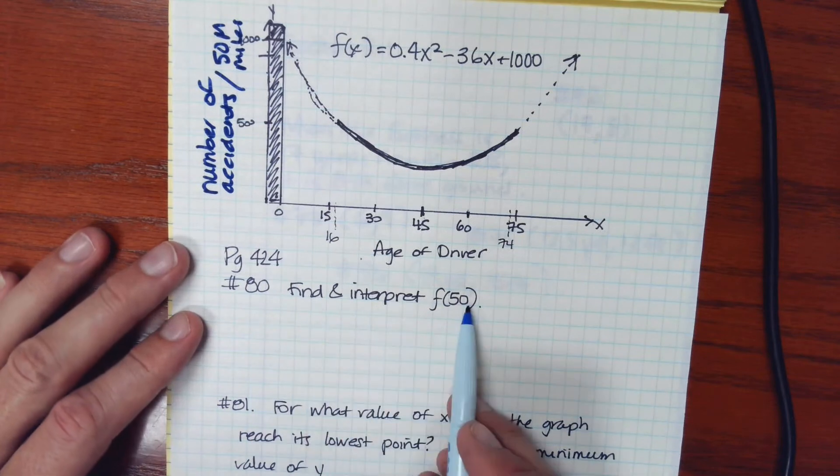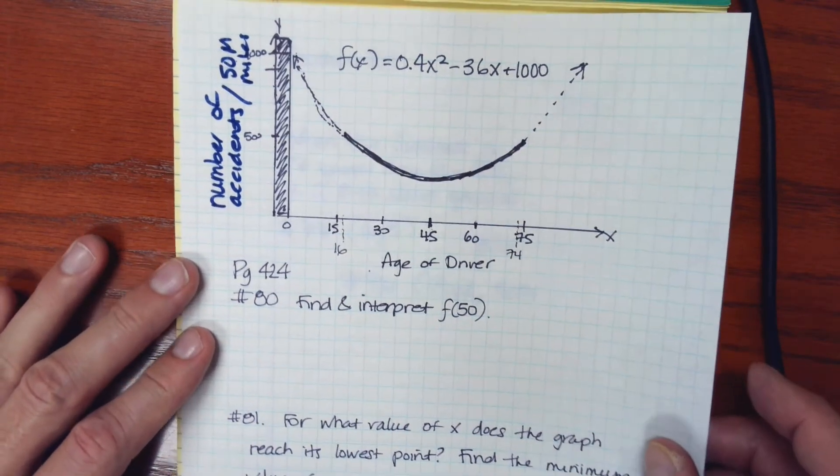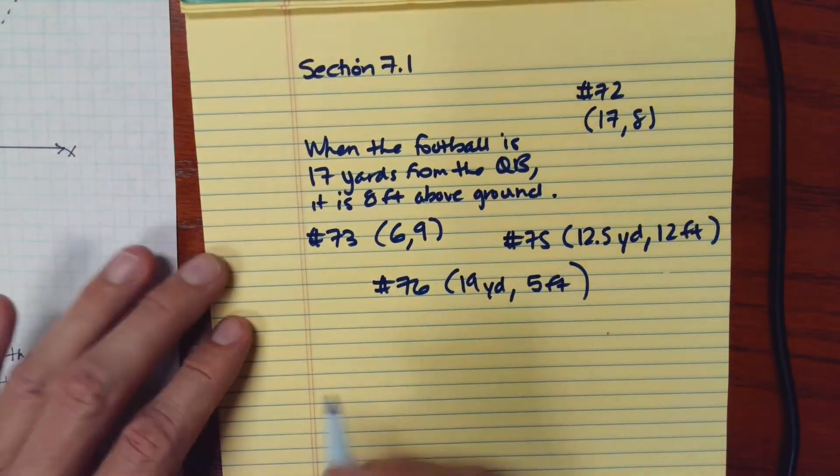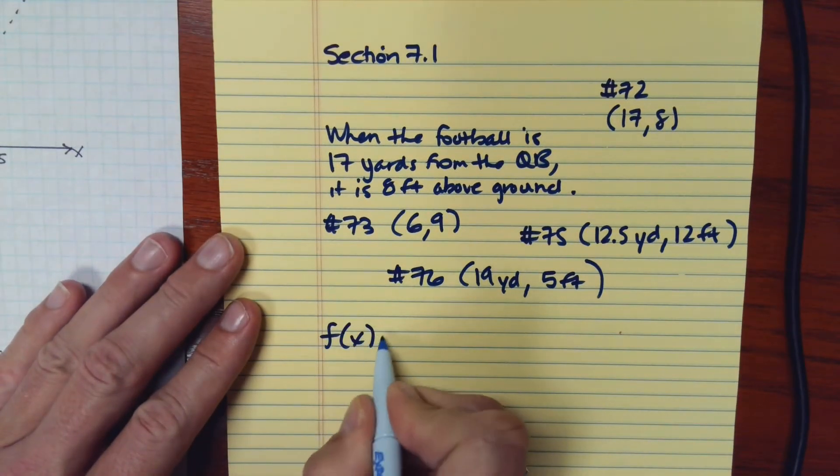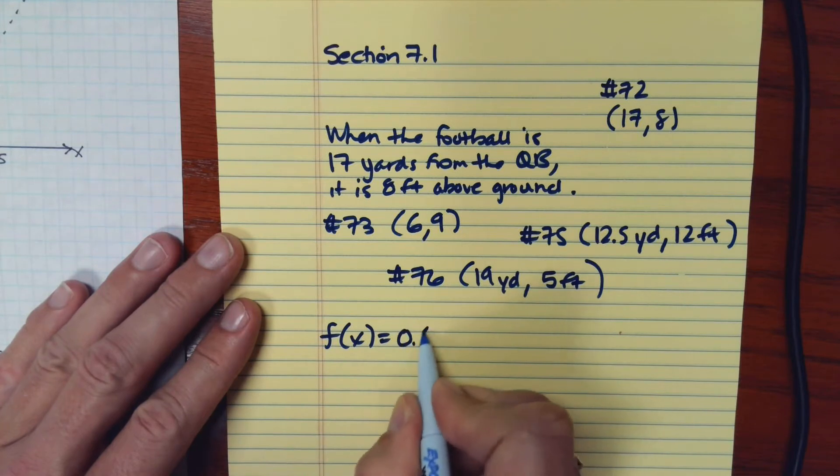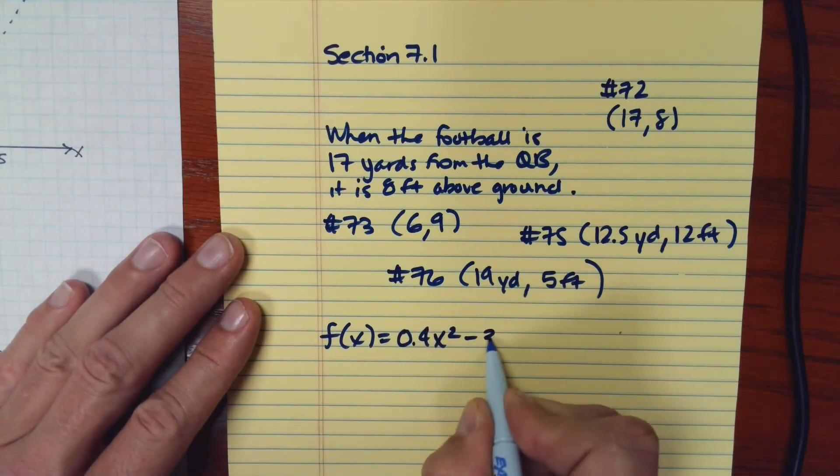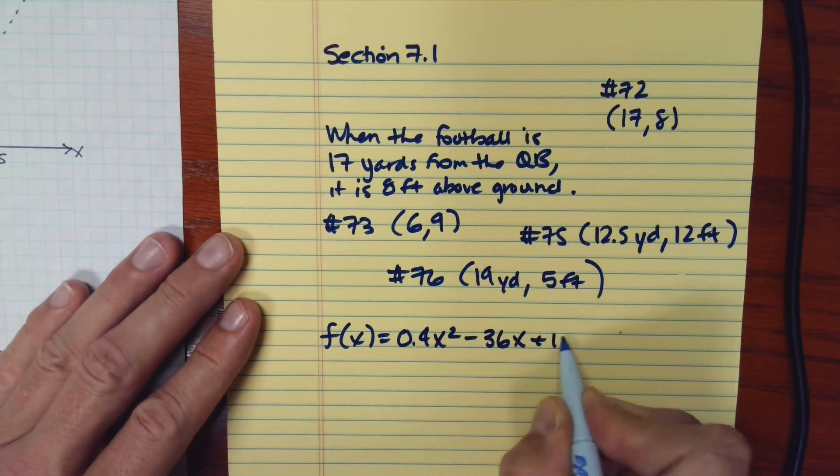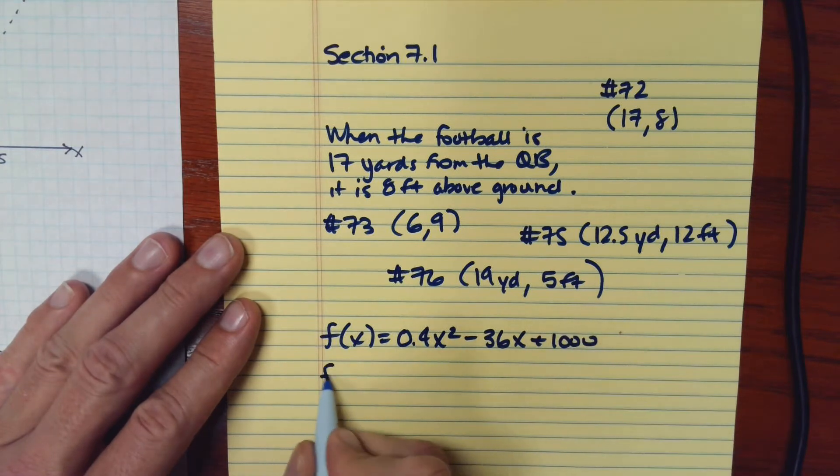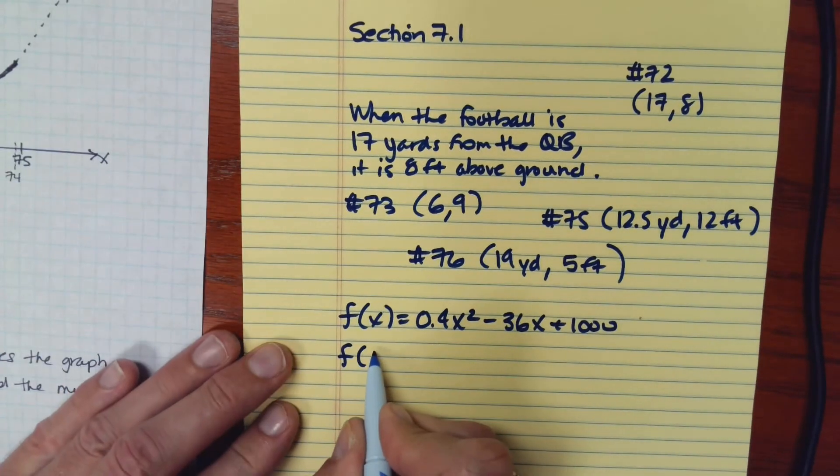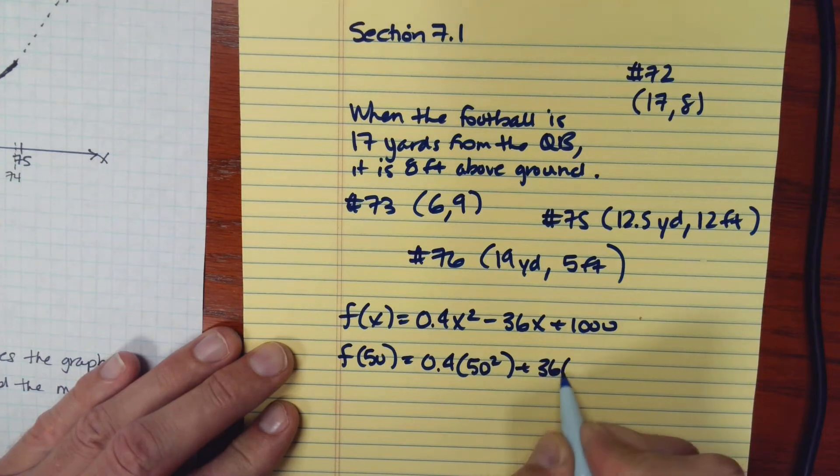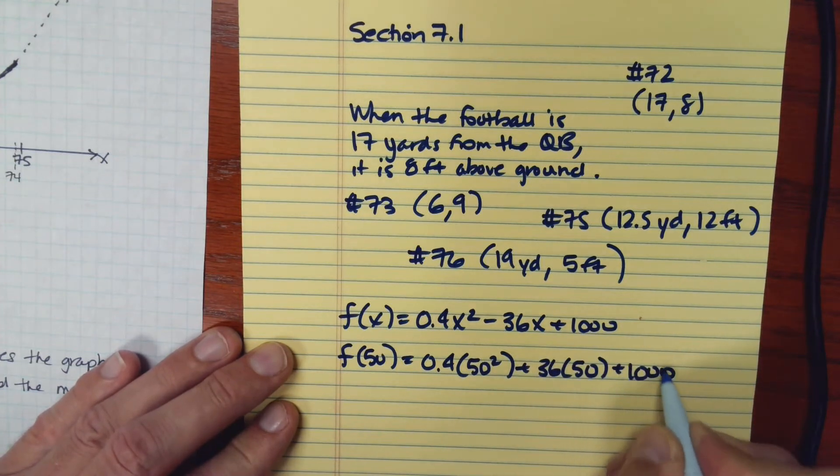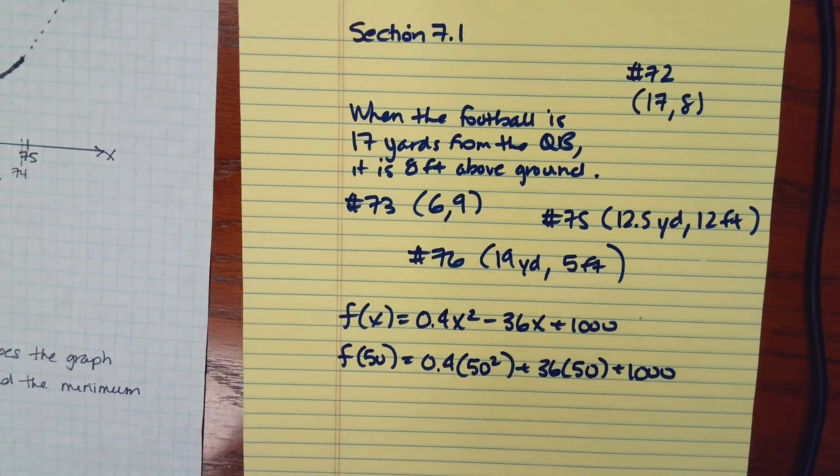So it says, find and interpret f of 50. So let's see. We want to find and interpret f of 50. Well, first of all, I'm going to copy down that our function is defined as 0.4x squared minus 36x plus 1,000. And I want to evaluate f of 50. So I'll be replacing x by 50 and then evaluate.